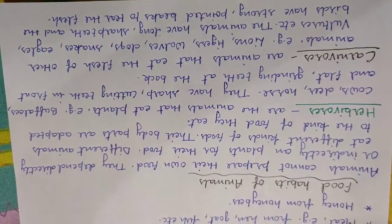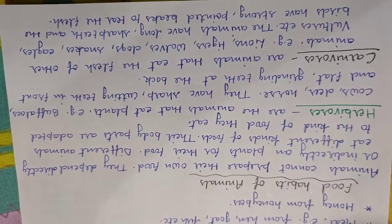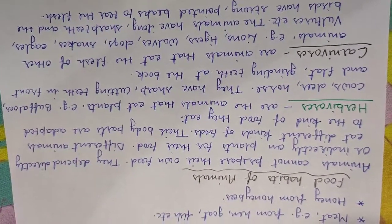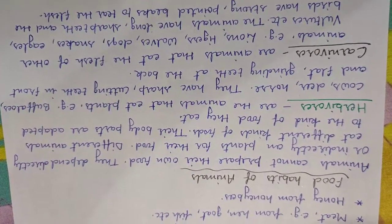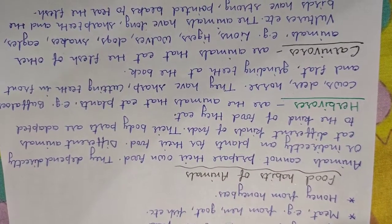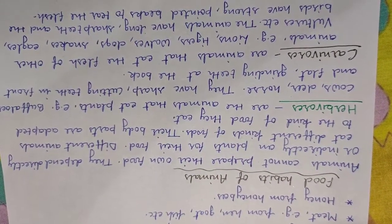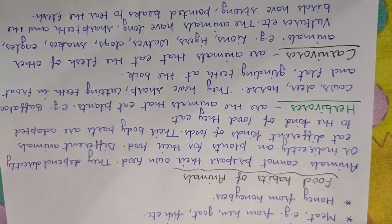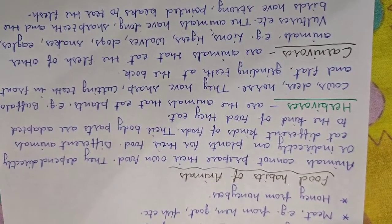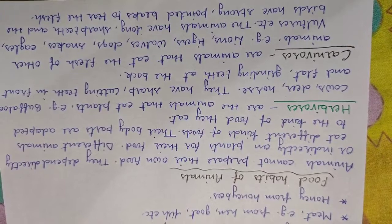Their body parts are adapted to the kind of food they eat. Herbivores are animals that eat plants. Buffalo, cow, deer, and horses are examples of herbivores. They have sharp cutting teeth in the front and flat grinding teeth at the back.